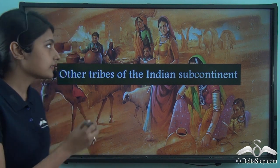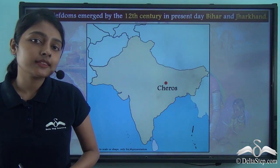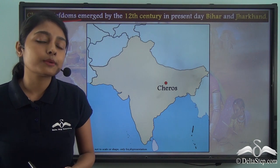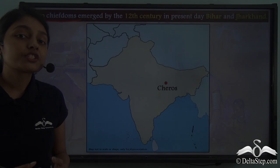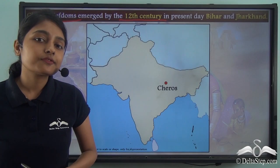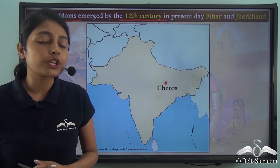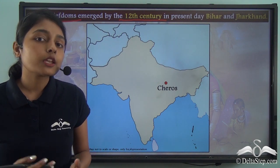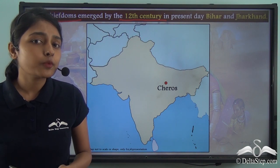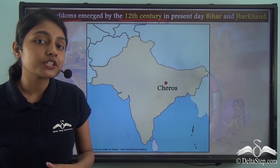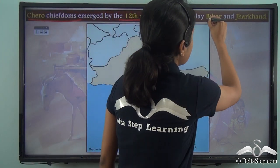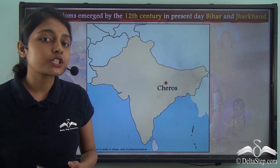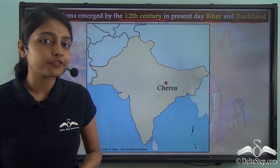We begin with the Chero Chiefdoms. The Chero Chiefdoms emerged by the 12th century, and their geographical location played a major role in shaping their lives. These Chero Chiefdoms were located in regions that fall in the present-day Indian states of Bihar and Jharkhand.